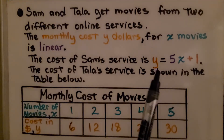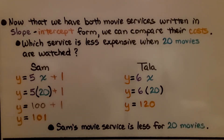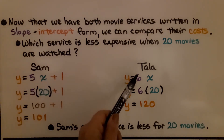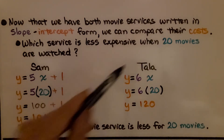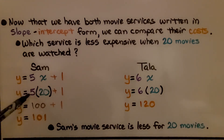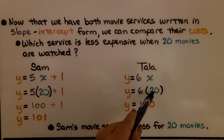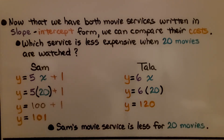Remember, Sam's service was y = 5x + 1. Now that we have both services in slope-intercept form, we can compare their costs. Which service is less expensive when 20 movies are watched? For Sam: 5 times 20 = 100, plus 1 = 101 dollars. For Tala: 6 times 20 = 120 dollars. Sam's movie service is less expensive for 20 movies at $101, compared to Tala's $120.